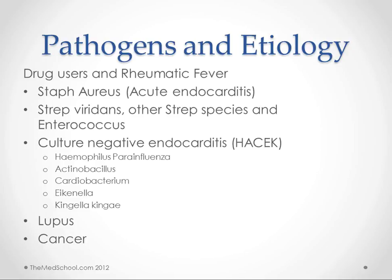The drug users that get this — we have Staph aureus and we ought to list Staph epidermidis here. Those are going to go most likely to the tricuspid valve, whereas if we have somebody who had a previous rheumatic fever, they are most likely going to have a damaged mitral valve. So on the right side of the heart we're going to be thinking about drug users; on the left side, we're going to be thinking more about rheumatic fever.